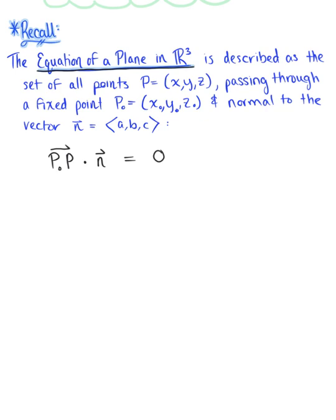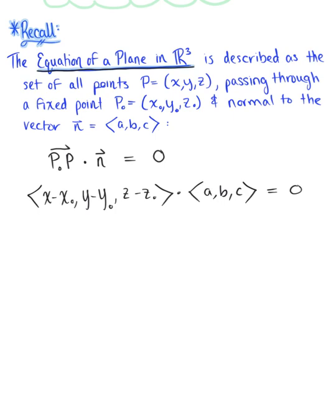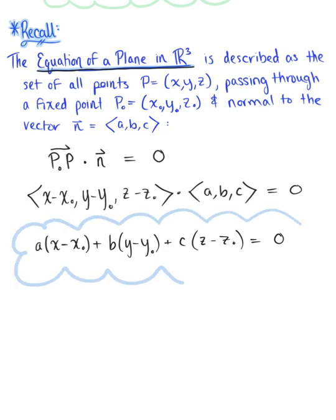Since our position vector exists on the plane and the normal vector is normal to the plane, we know that the dot product of these two vectors is equal to zero by definition of the dot product. Expanding this out, we have the position vector ⟨x − x0, y − y0, z − z0⟩ dotted with the normal vector ⟨a, b, c⟩ equal to zero. Computing the dot product, we end up with: a(x − x0) + b(y − y0) + c(z − z0) = 0. This is the general equation of the plane, which we will now use to find the equation of a tangent plane.